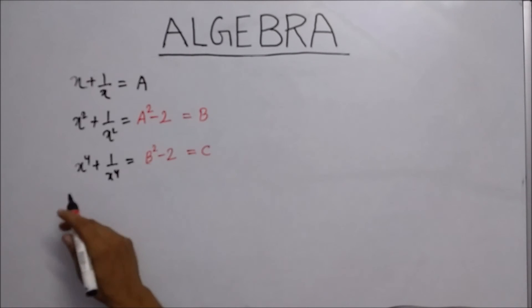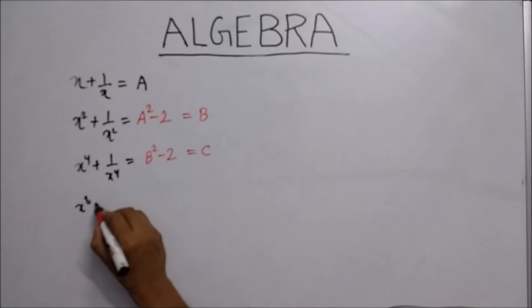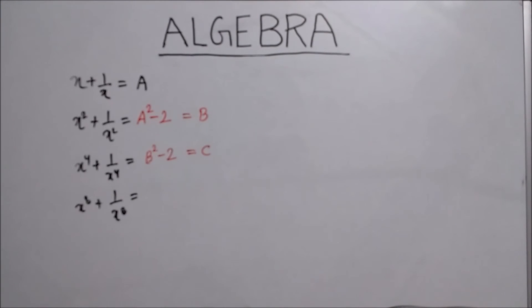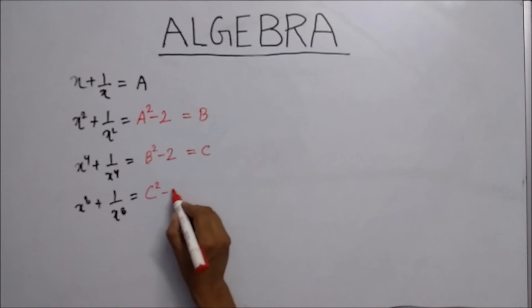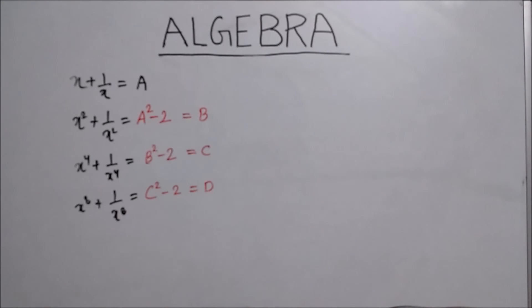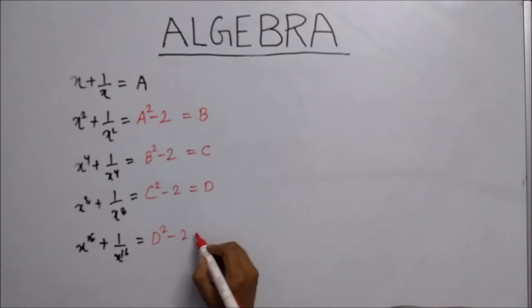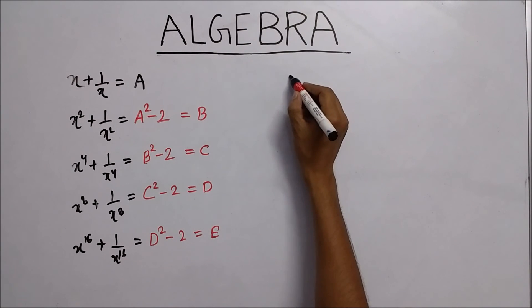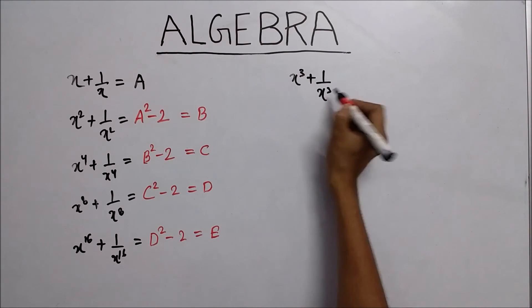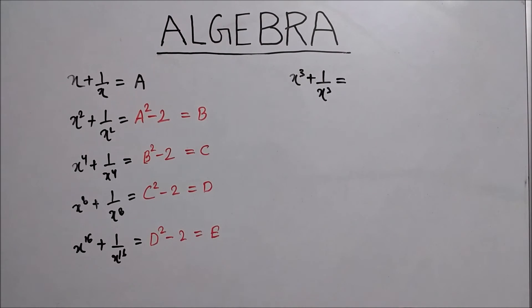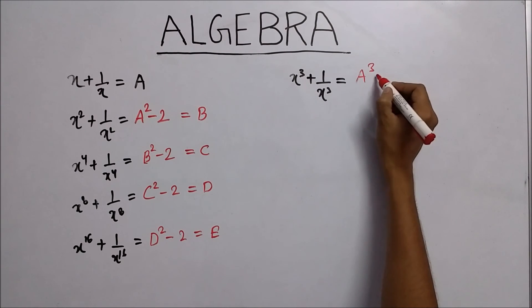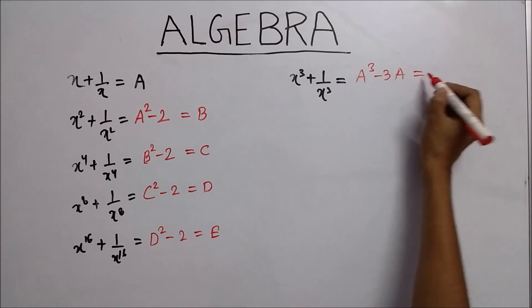Again, when you have to find the value of x to the power 8 — since 4 times 2 equals 8 — the value will be c squared minus 2. Write this as d. Again, for x to the power 16 — since 8 times 2 equals 16 — write d squared minus 2 and call this e. Similarly, you already know x cubed plus 1 upon x cubed equals a cubed minus 3a. Write this as b1.